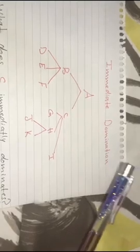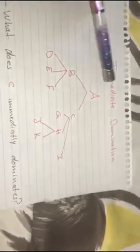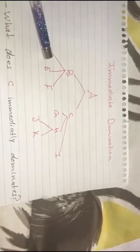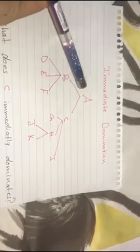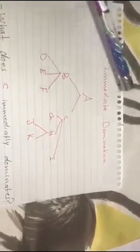So you can't immediately dominate something if and only if no other node intervenes. So for example, A doesn't immediately dominate D because B is standing between them, between D and A.